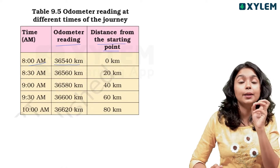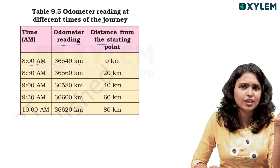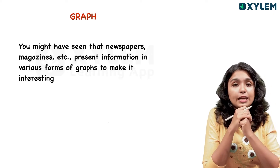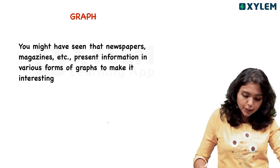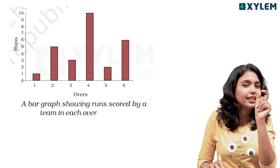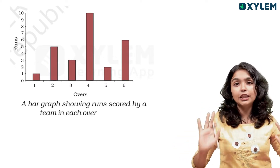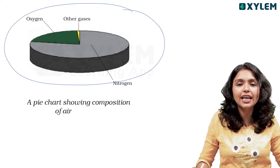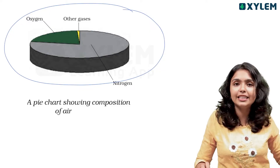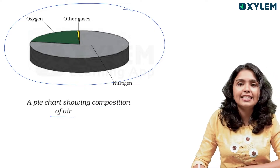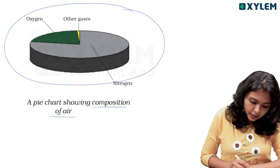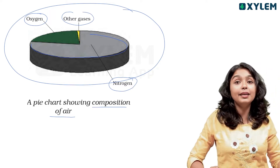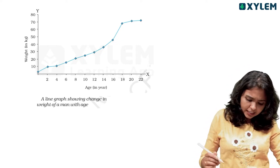The easiest method is to use a graph — a pictorial representation. You can see graphs used in newspapers, magazines, and during elections. In the same way, we use graphs in our textbook. For instance, a pie chart — like the composition of air showing nitrogen, oxygen, and other gases. The graph we use here is a line graph.